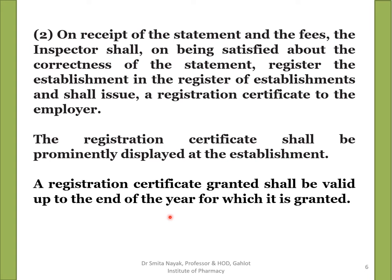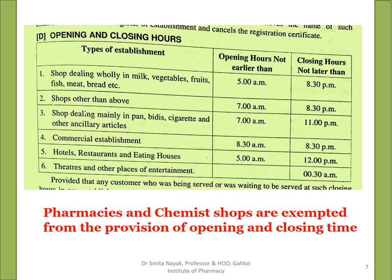One of the important provisions under this Act deals with the opening and closing hours for any establishment. There are six categories of establishments listed in column 1, with the opening hours and the latest closing hours prescribed for each. It is very important to note that pharmacies and chemist shops are exempted from the provision of opening and closing time, because they come under the category of essential health services.